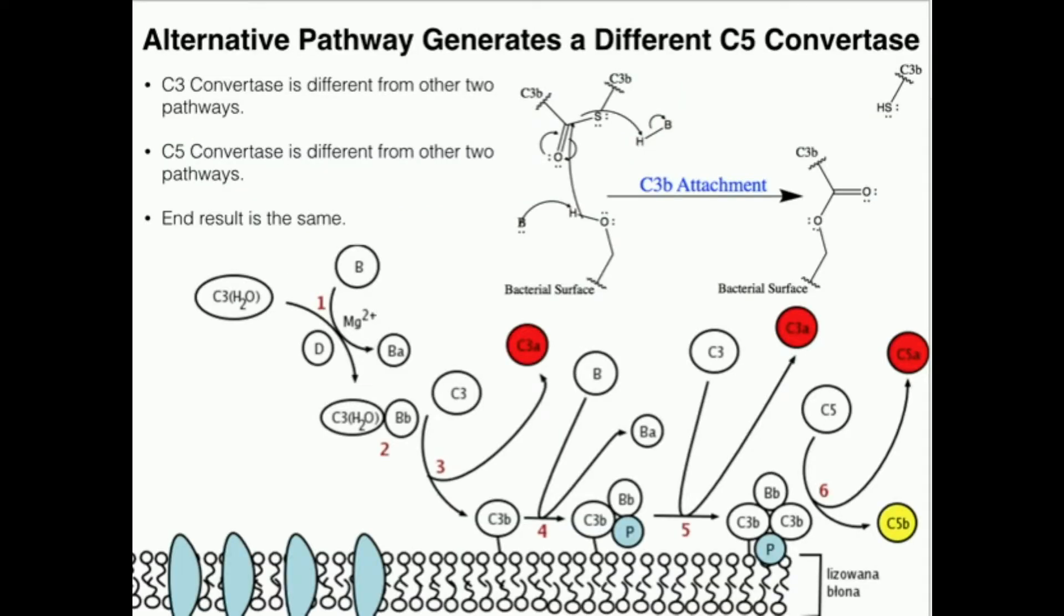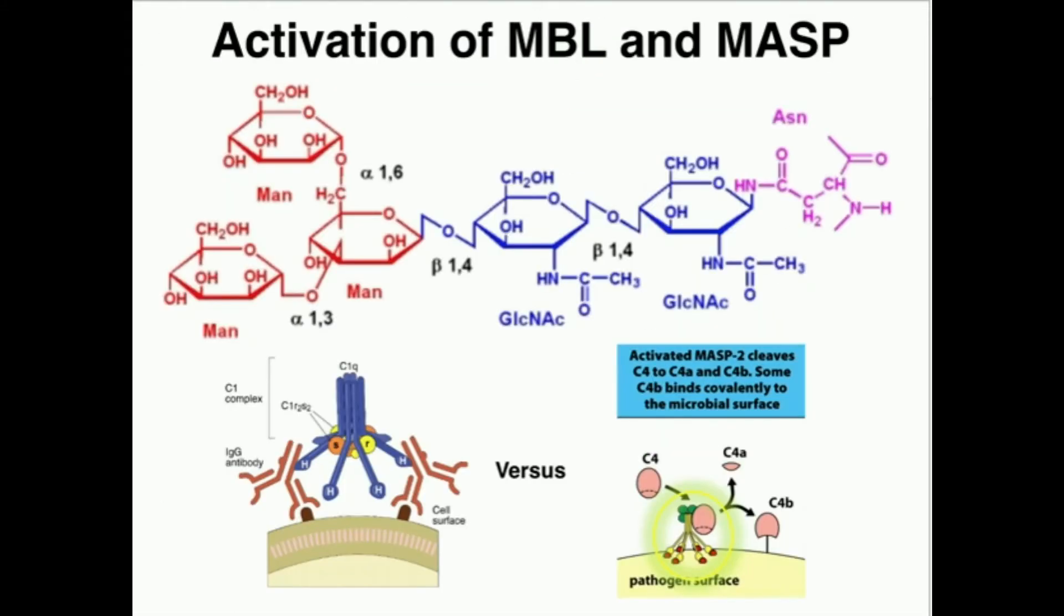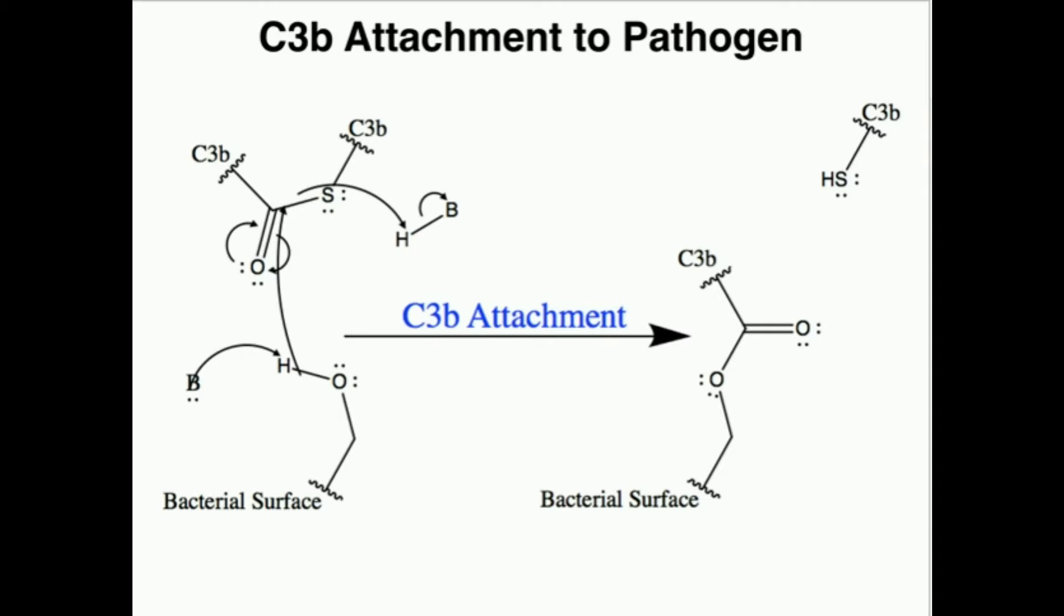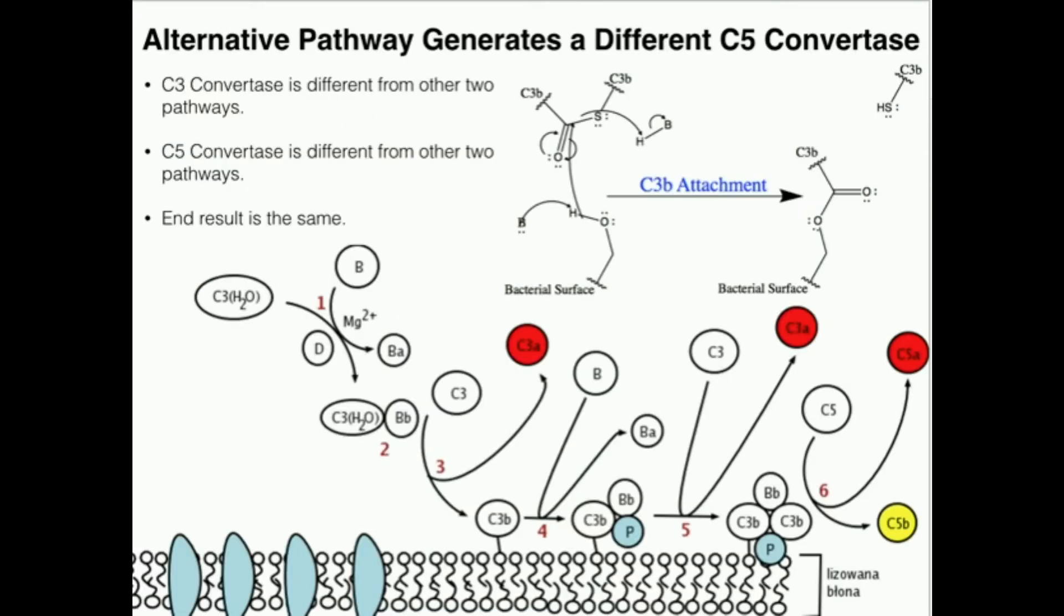Now here, this C3B actually is going to bind to the membrane. C3B, remember, has that internal thioester bond. So a serine residue, for example, on a protein on the surface of the bacteria can actually attach itself to the carbonyl of that thioester bond. And now the C3B protein is now attached to the bacterial surface in an ester linkage. So that C3B there is now bound. Very much in the same way as free in solution with hydrolyzed C3, protein D can split B into BA and BB. The BB is going to remain bound to this C3B that's now attached to the surface.